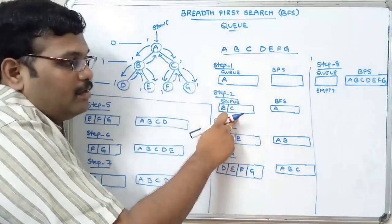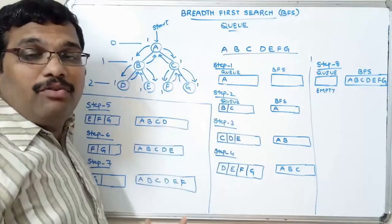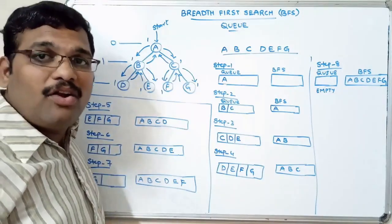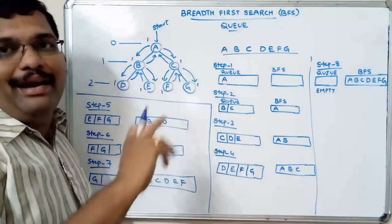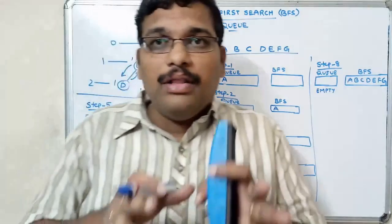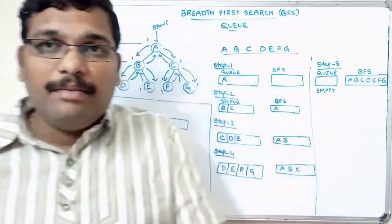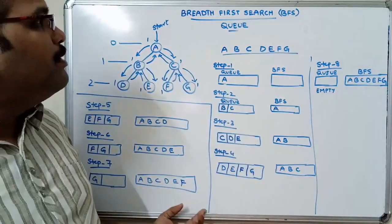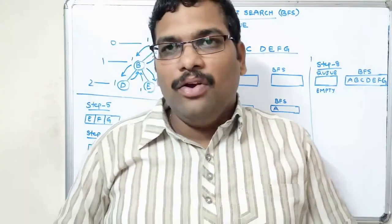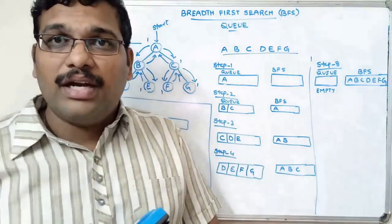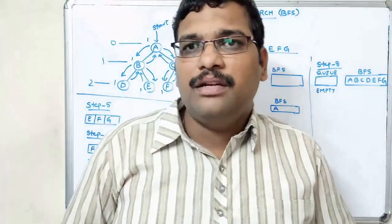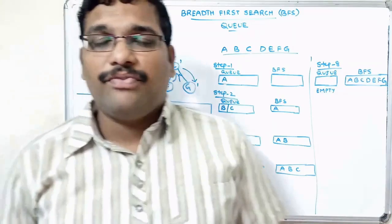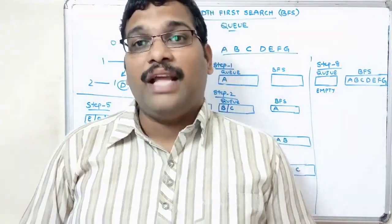To summarize: insert the start node into the queue. If the queue is not empty, remove the node from the front end and place it in BFS, then insert all adjacent nodes of that node at the rear end. Follow the same procedure. All insertions are done at the rear end and all deletions are done from the front end. BFS is a very simple traversal technique. If you have any doubts feel free to post in the comment section. If you understood, like and share the sessions with your friends and don't forget to subscribe to our channel. Thanks for watching, keep following. Thank you very much.